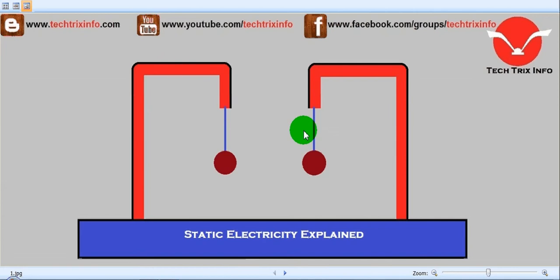Now rub a glass rod with a silk cloth and then touch both the pit balls one after another. Just rub them and touch these pit balls.